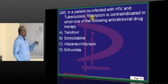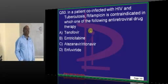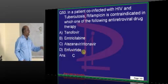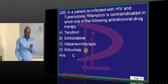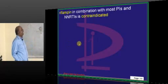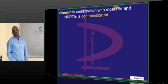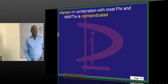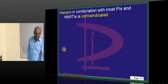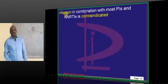In a patient co-infected with HIV and TB who needs rifampicin: any protease inhibitor and rifampicin cannot be given together. NNRTIs and most protease inhibitors are contraindicated to be given with rifampicin. In every entrance exam of 130 questions, there will definitely be one question on HIV drugs.